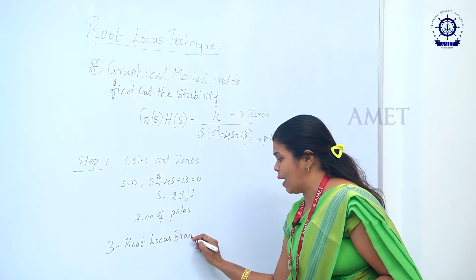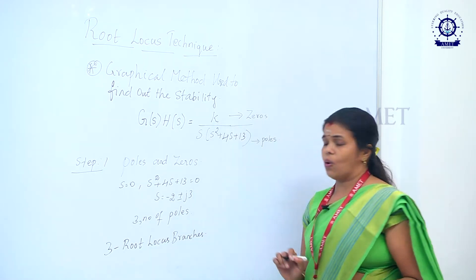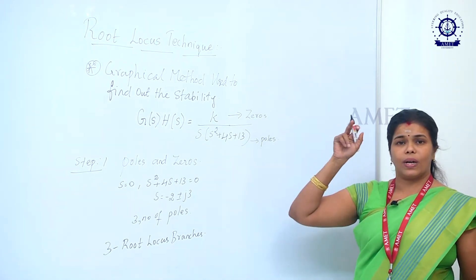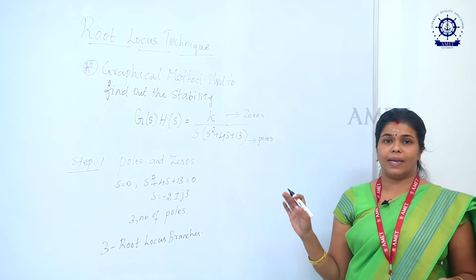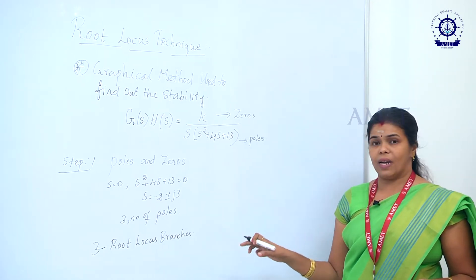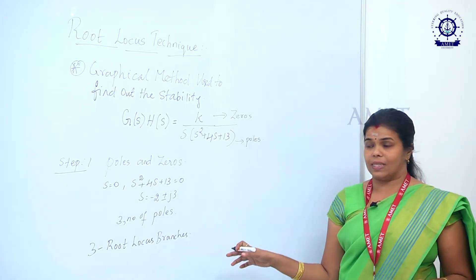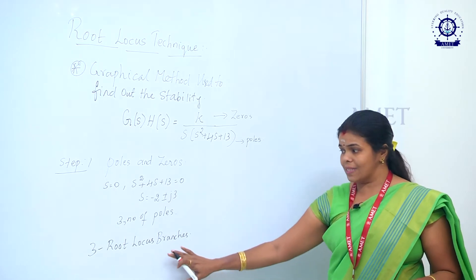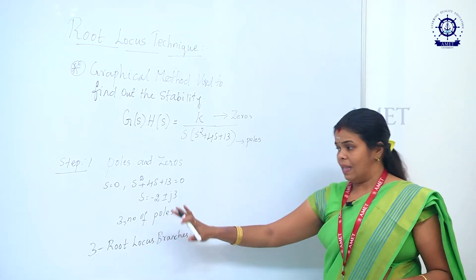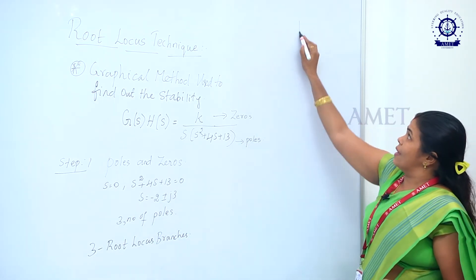We need to identify where the root loci are present because we are going to plot them on a graph sheet. The next step, after finding the number of poles, is to plot them on the graph.